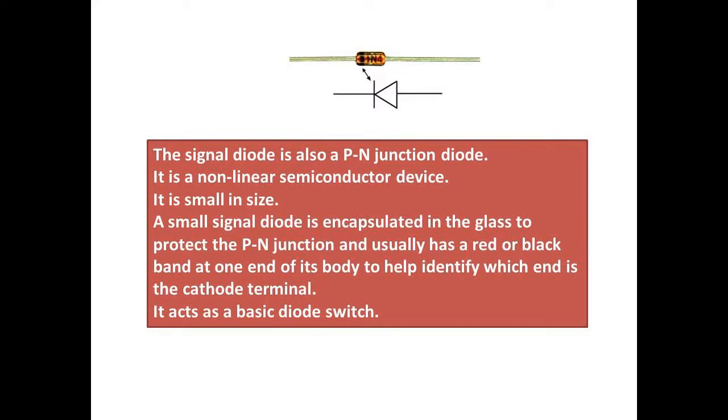It is small in size. A small signal diode is encapsulated in glass to protect the PN junction and usually has a red or black band at one end of its body to help identify which end is the cathode terminal.